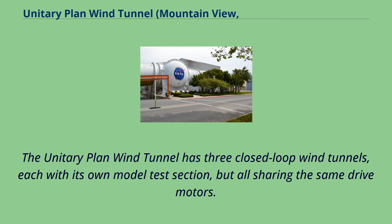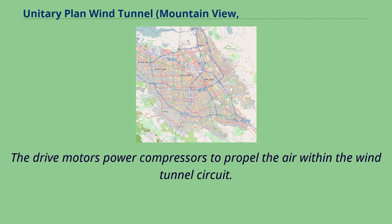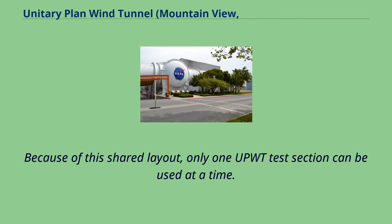The Unitary Plan Wind Tunnel has three closed-loop wind tunnels, each with its own model test section, but all sharing the same drive motors. The drive motors power compressors to propel the air within the wind tunnel circuit. Because of this shared layout, only one UPWT test section can be used at a time.